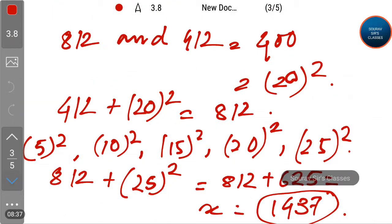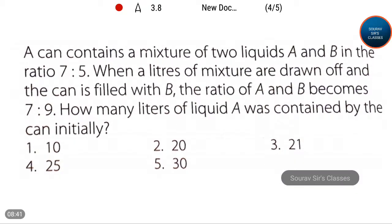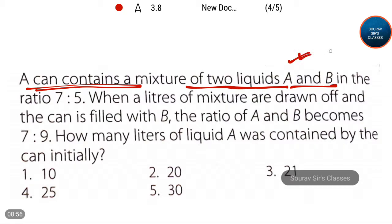Let's go to our next question. A can contains a mixture of two liquids, A and B, in the ratio of 7 is to 5. So the ratio of liquid A to liquid B is given as 7 to 5. We have to find out how many liters of liquid A was contained by the can initially.